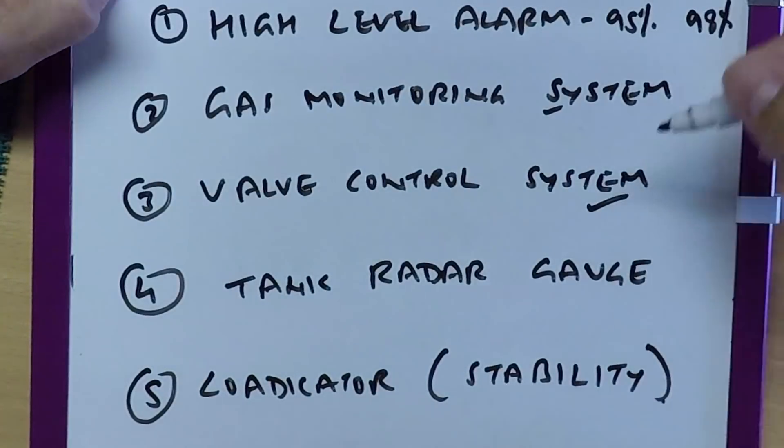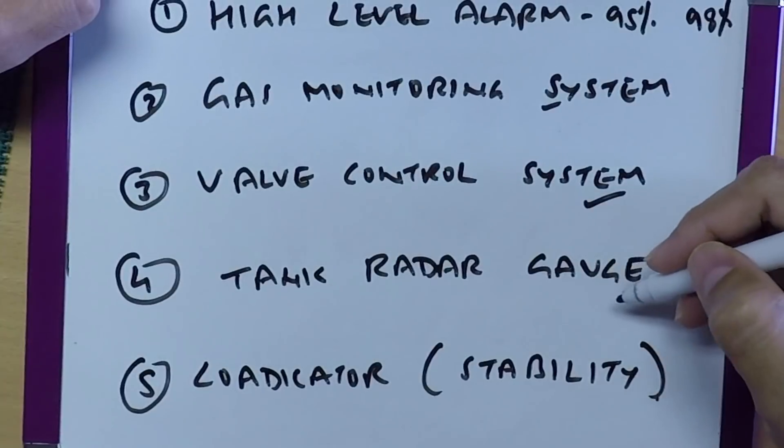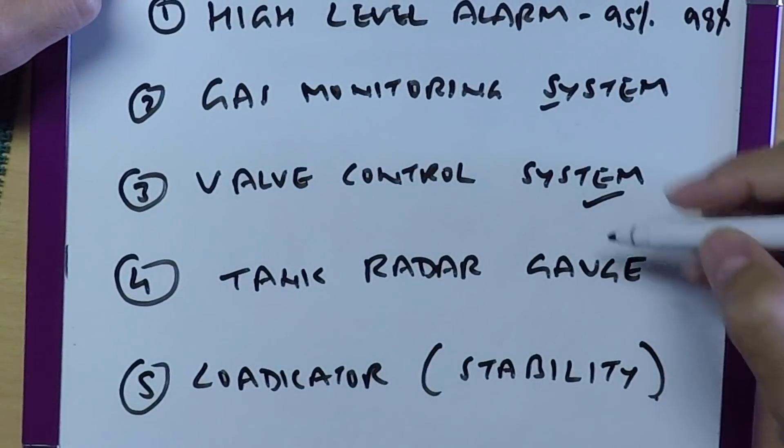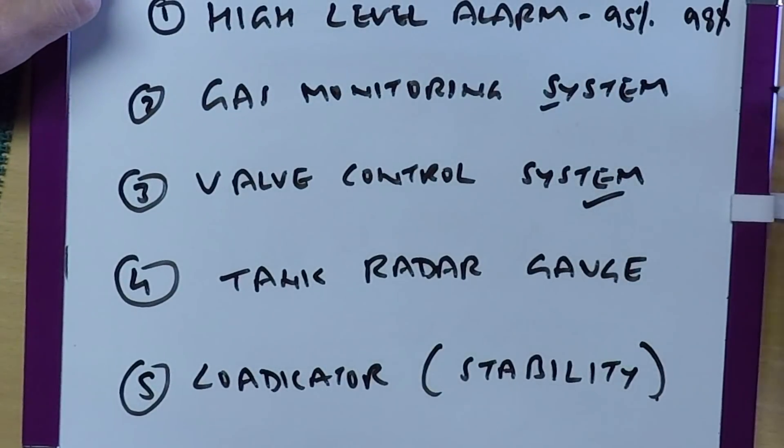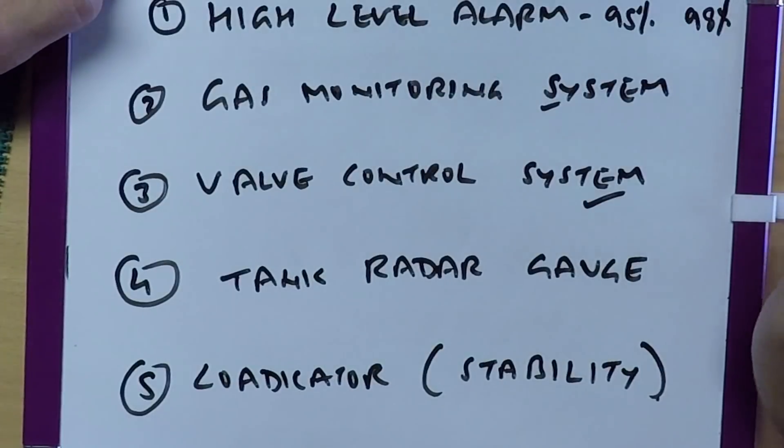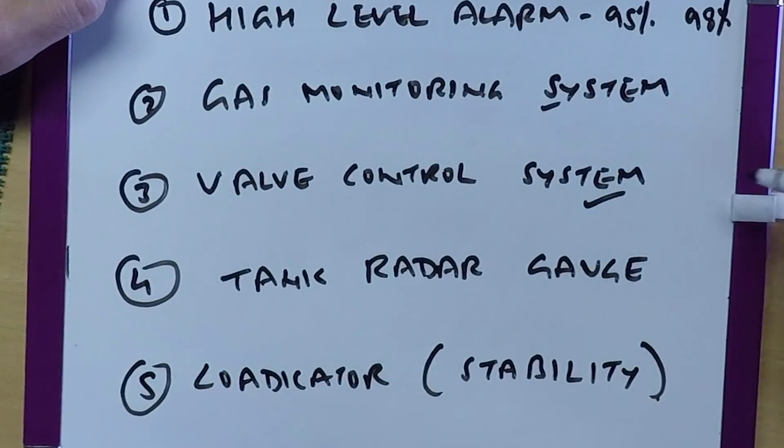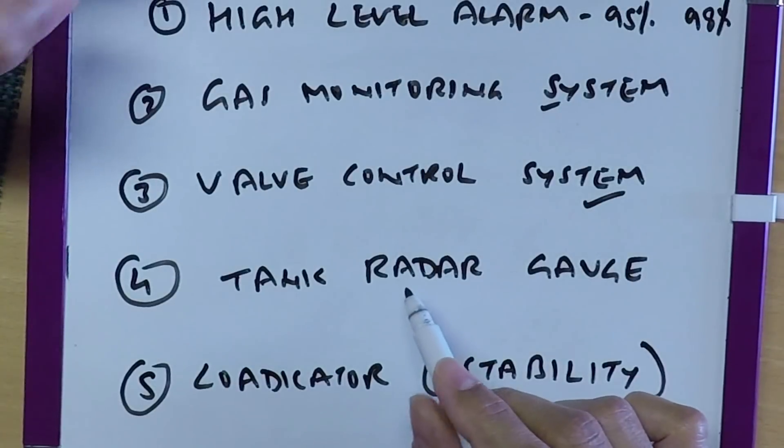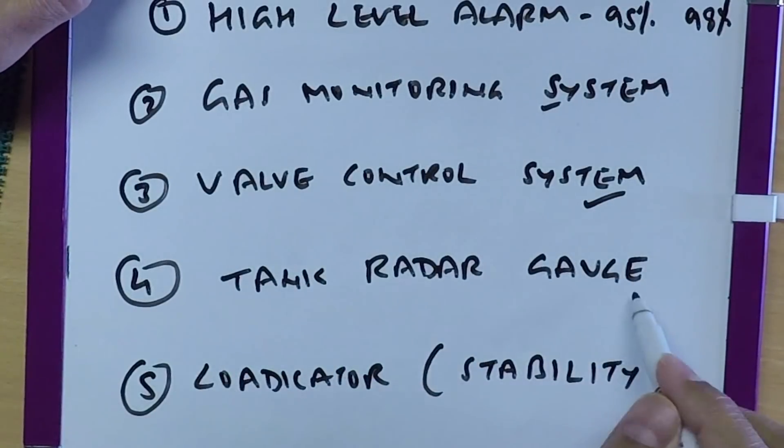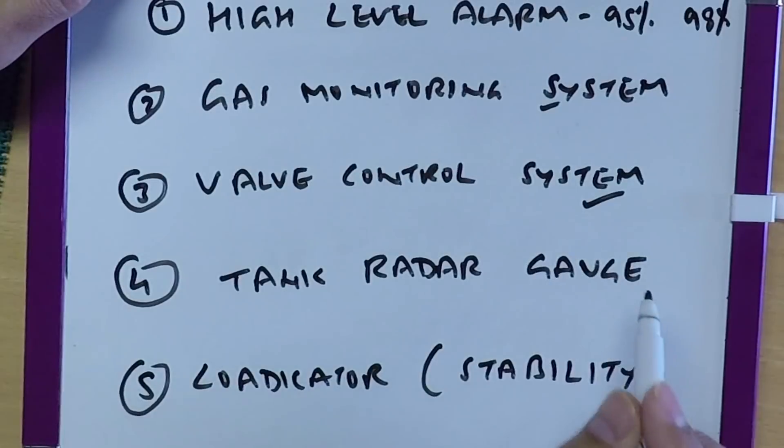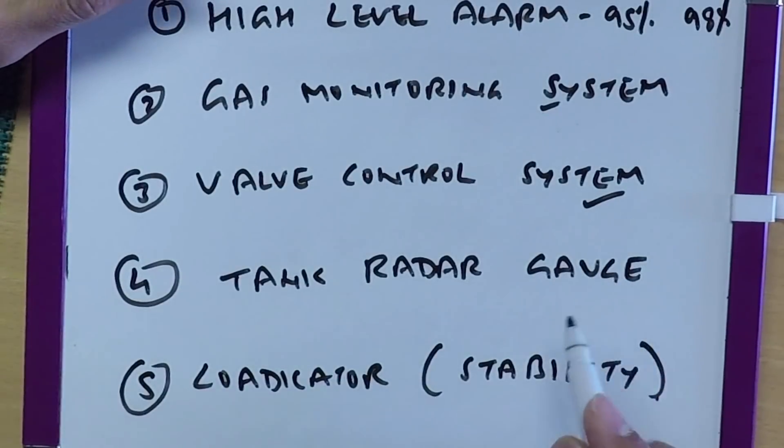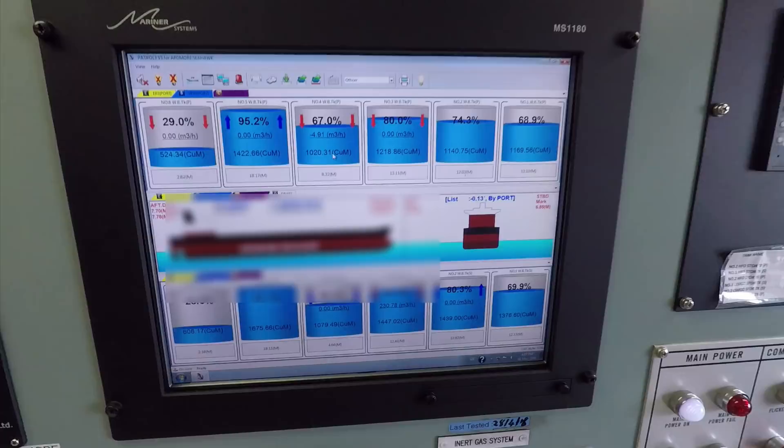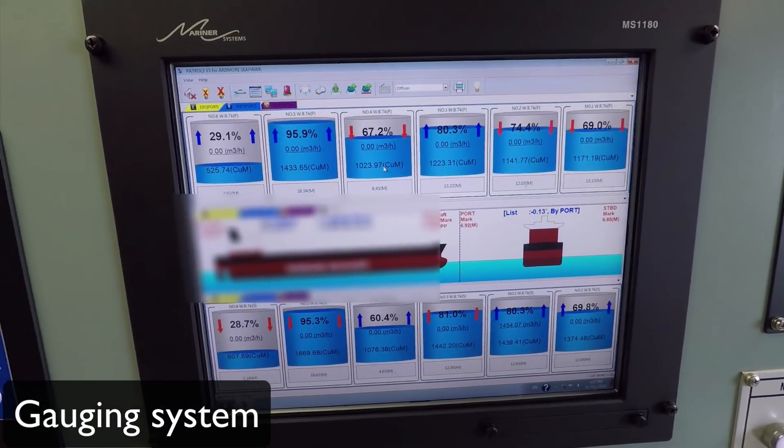Another system which we have is tank radar gauge. Because cargo tank levels are very critical, and we need exact levels of cargo tank, especially while topping off when we are about to finalize the quantity. We have the tank radar gauge. These are basically radar gauges fitted on each tank, and these radar gauge readings are compared with manual UTI manual gauges and ensure that they are correct all the time. System which gives you level of all the tanks. And duty officer can select and toggle between water ballast tank, cargo tanks, and fuel tank—whichever tanks he wants.